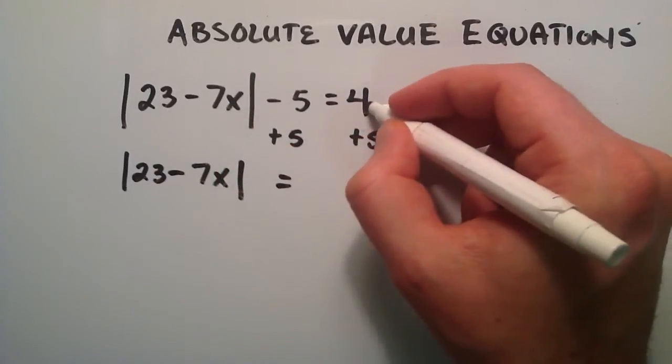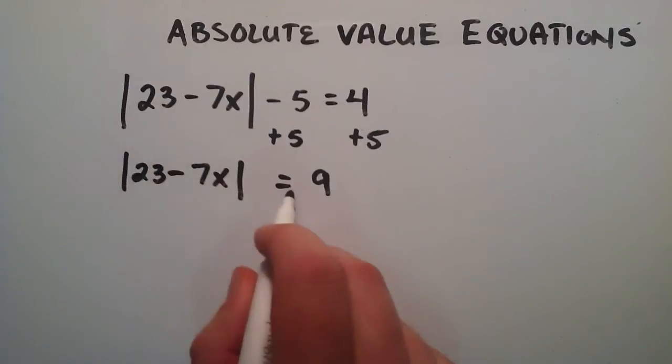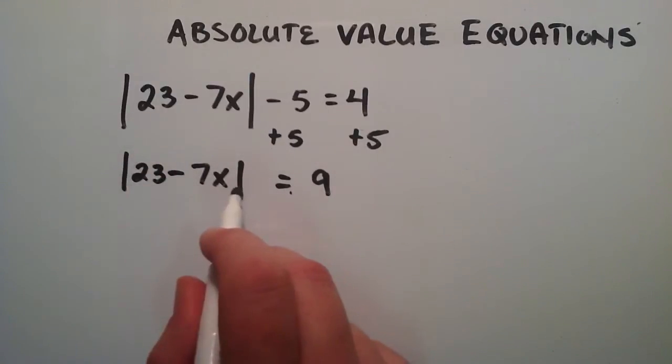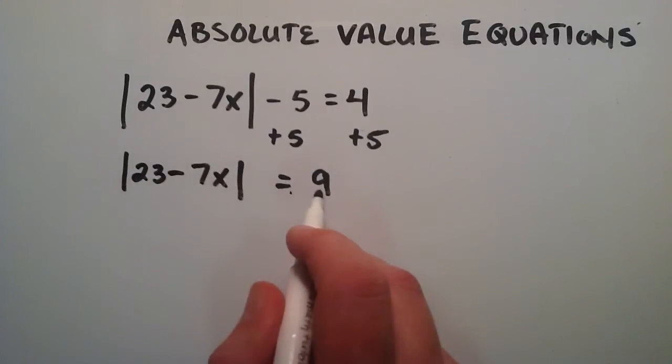And that's equal to 4 plus 5, which is 9, on the right hand side. Now since this is an absolute value and it equals 9, that means that whatever this is has to equal either a positive 9 or a negative 9 for this statement to be true.